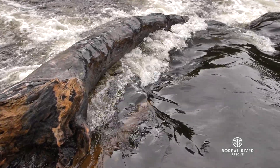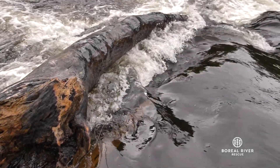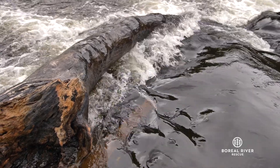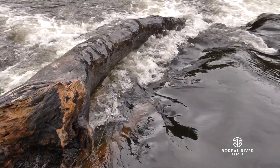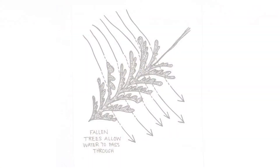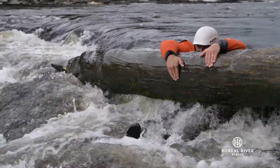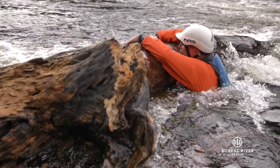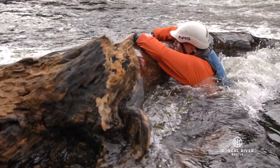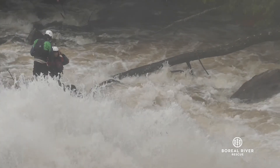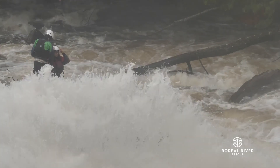Now to move on to some dangerous features. First, strainers. A strainer is anything in the river that allows the water to pass through it but not the bigger objects. Think of it like a pasta strainer where the water can flow through but the noodles get stuck. Strainers are extremely dangerous because if a person floats into one, they can be pushed underwater and pinned onto the strainer by the current. The most common strainers in rivers are trees, but other things can create strainers as well.